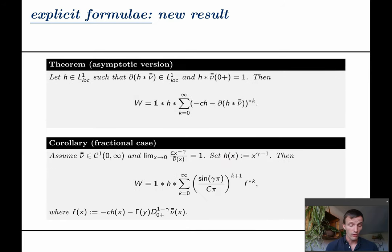A simple corollary allows us to use fractional calculus for a particularly nice representation. Namely if double bar ν is asymptotically equivalent to some power function we may choose this other power function to play the role of h here above and this leads to this series expansion where F is given in terms of h and the fractional derivative of double bar ν.